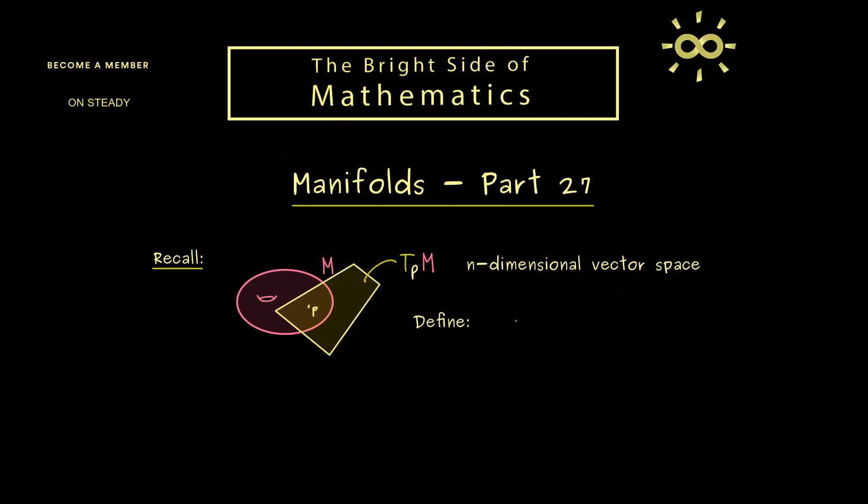And of course, this immediately explains why linear algebra comes into the game. In fact, vector spaces are now the important objects of this video. And moreover, for every vector space, we can also define the dual space with a star.